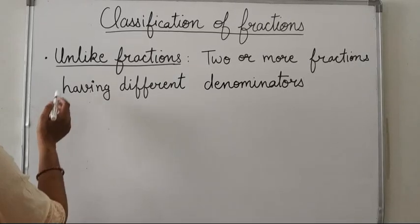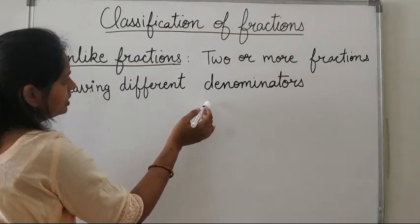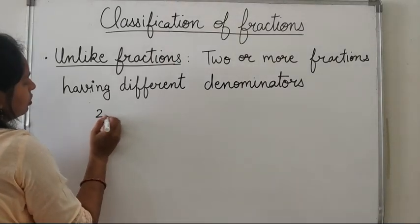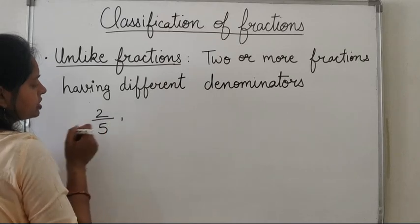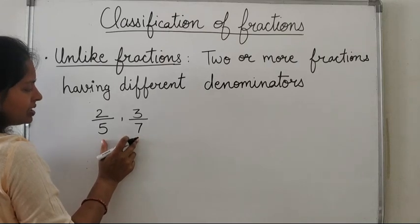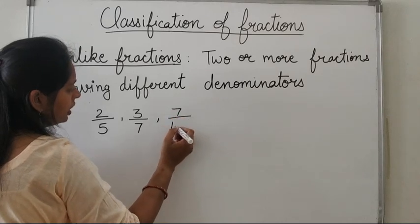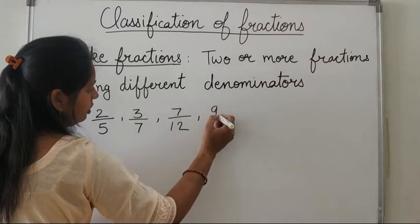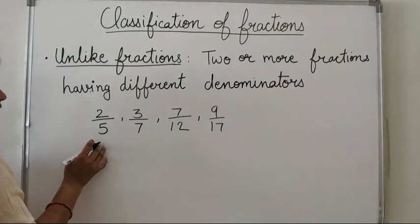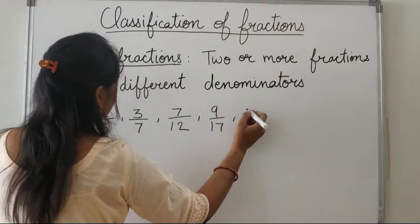Next is unlike fractions — two or more fractions having different denominators are known as unlike fractions. For example, 2 upon 5 and 3 upon 7 have denominators 5 and 7 which are different. We can take more examples: 7 upon 12 and 9 upon 17. All the denominators are different, so they are unlike fractions.